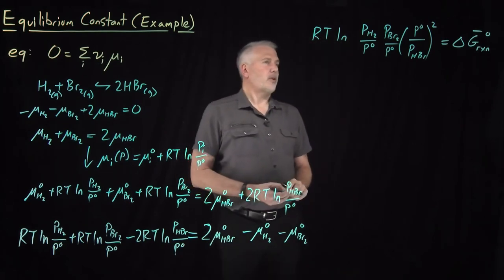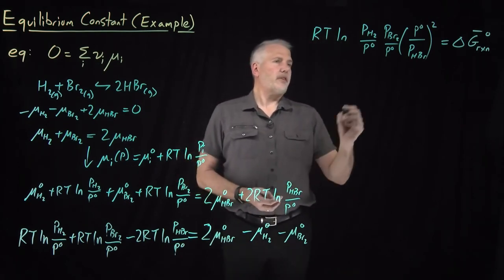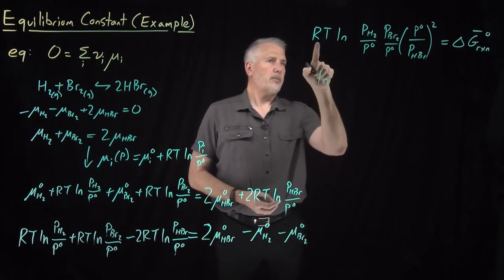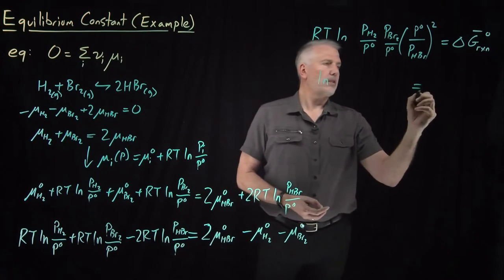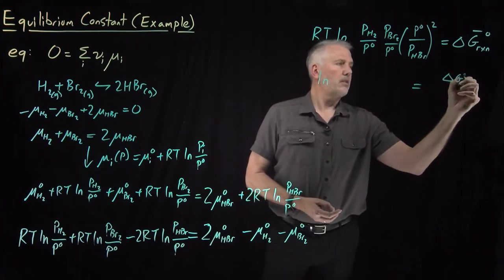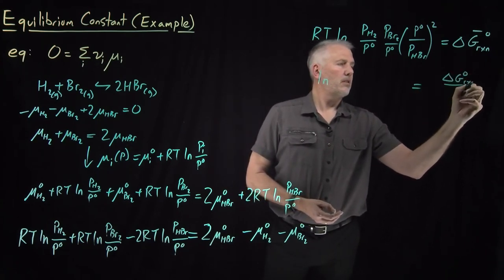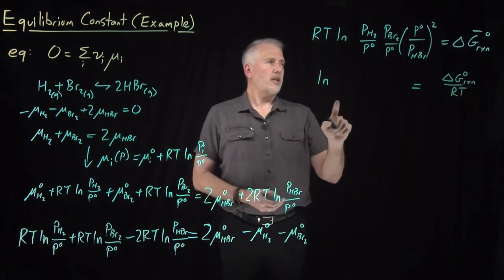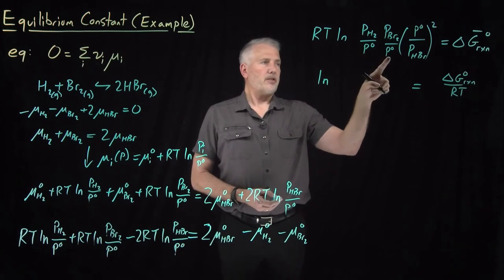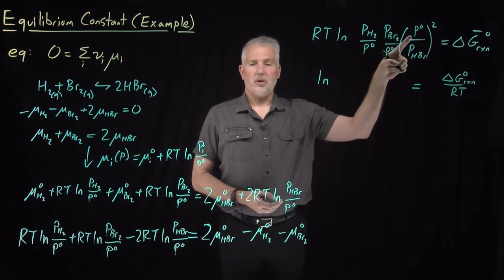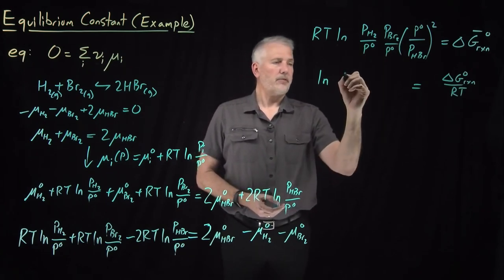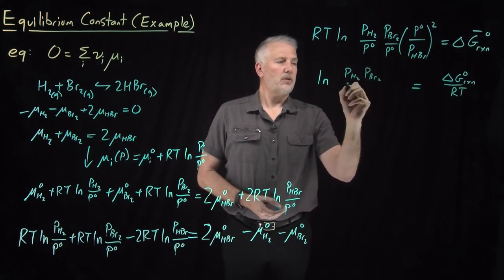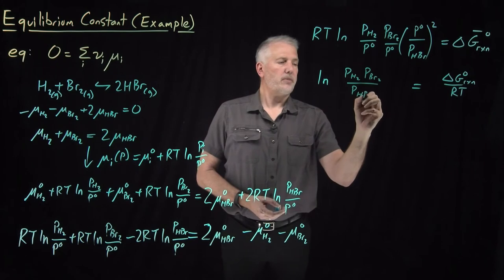Moving RT over to the right side, I'm left with just a natural log on the left. The P° terms — appearing twice in the denominator and twice in the numerator — cancel, leaving just the pressure of H₂ times the pressure of Br₂ over the pressure of HBr squared.